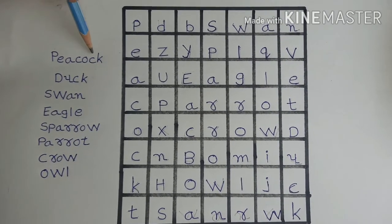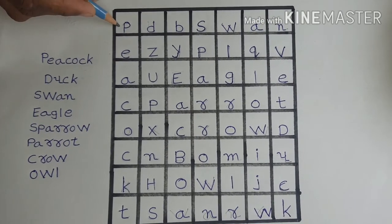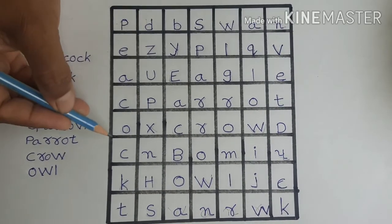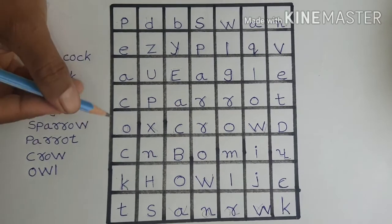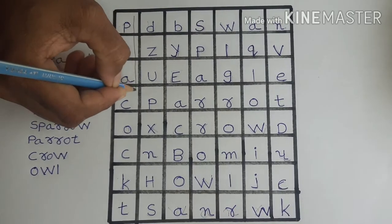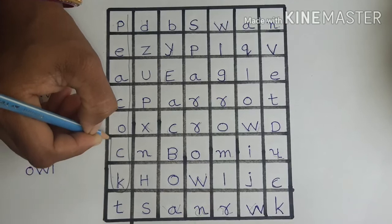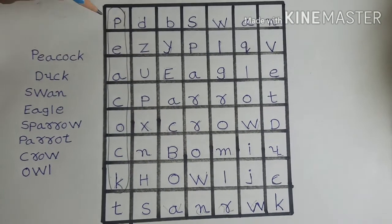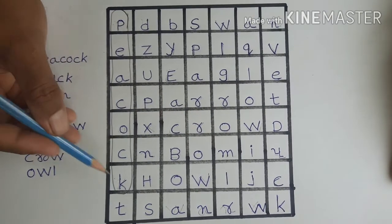Peacock. So in the box, let's do the spelling. P-E-A-C-O-C-K. That's peacock, friends. Now let's find it in the box and circle it. Can you see it? P-E-A-C-O-C-K. Peacock.